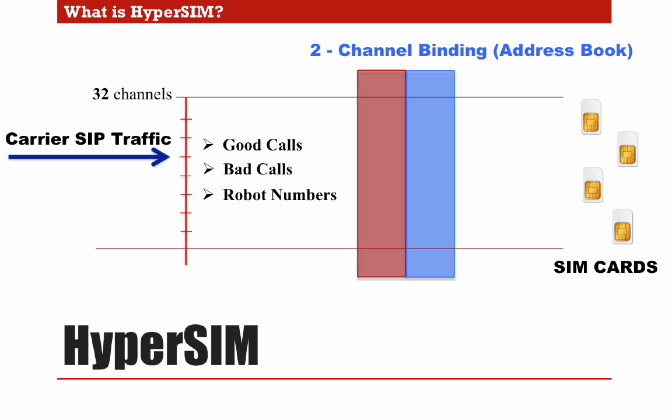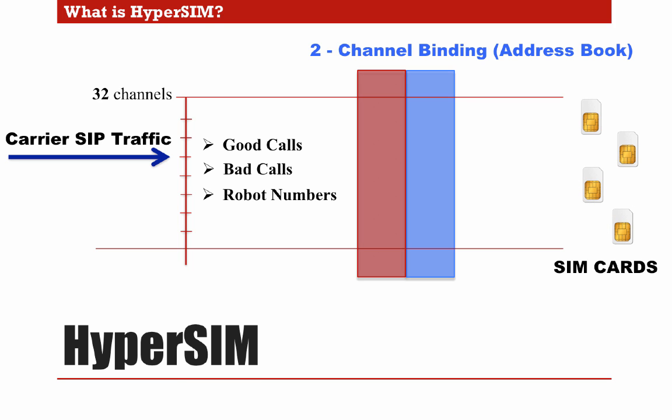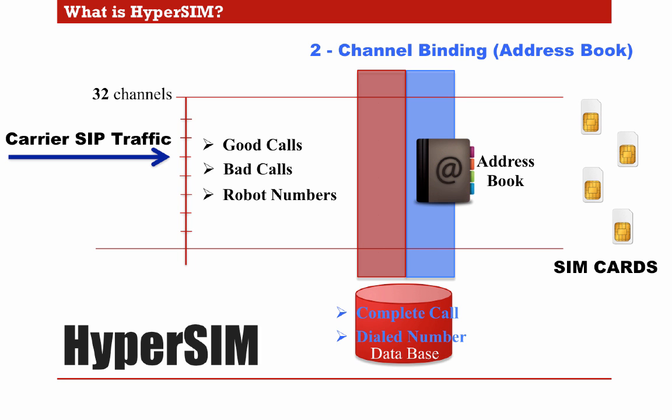The second element is channel binding. GSM operators monitor the amount of new dialed numbers every day on each SIM card. In call termination, it is very common to have the same destination number dialed from several or even all the GSM ports, since gateways by default have a cycling distribution of traffic over the GSM channels. Network operators can determine that a certain range of SIM cards is usually calling the same number, and SIM cards will start getting blocked. Normal behavior is to dial the same usual numbers from the phone's address book in order to simulate human calling behavior. Channel binding will start saving every incoming call — either a complete call or just a dialed call — in a database, and will create a virtual address book for each GSM module.